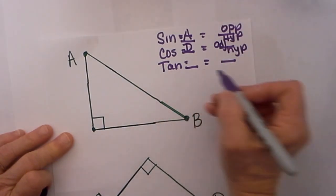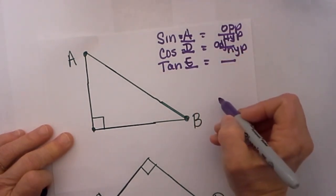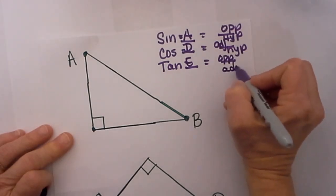And then the tangent is going to be the tangent of E, and the tangent is going to equal the opposite side over the adjacent side.